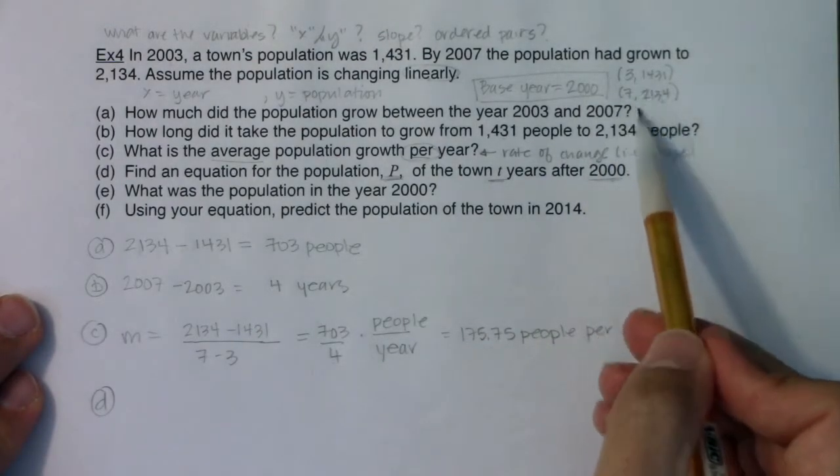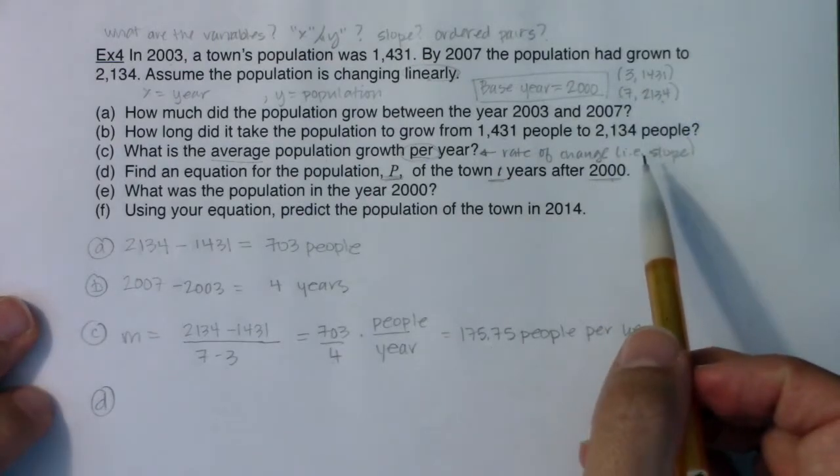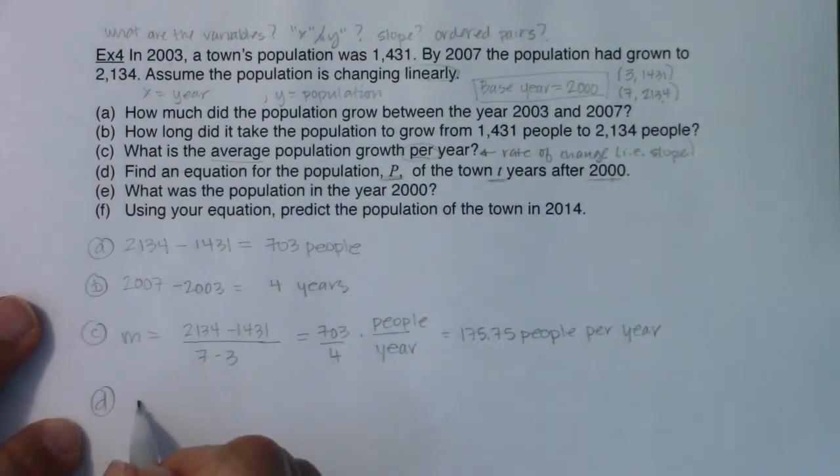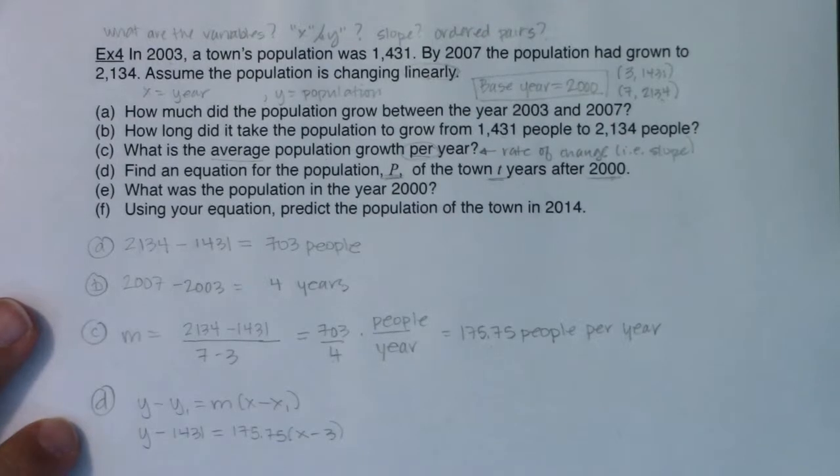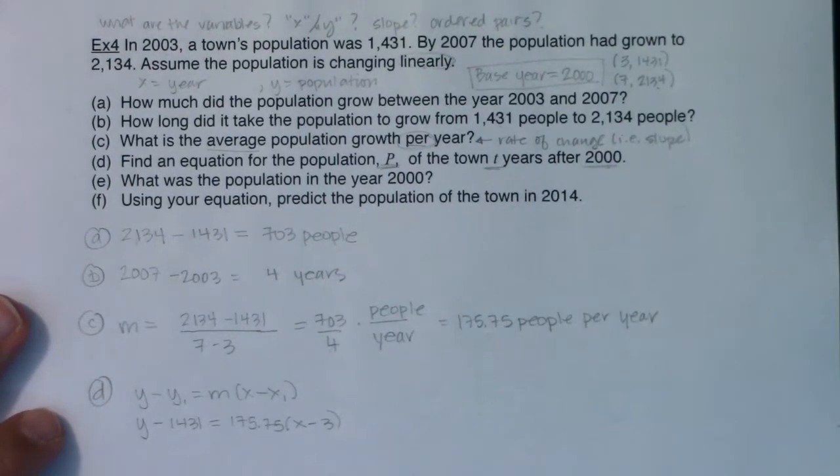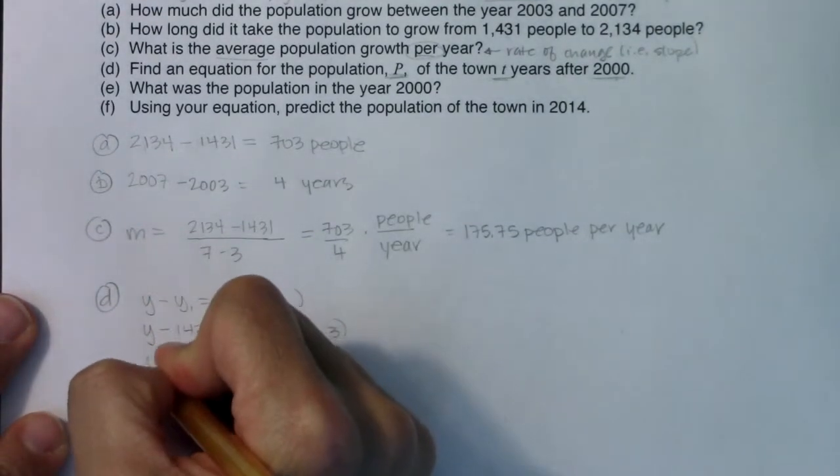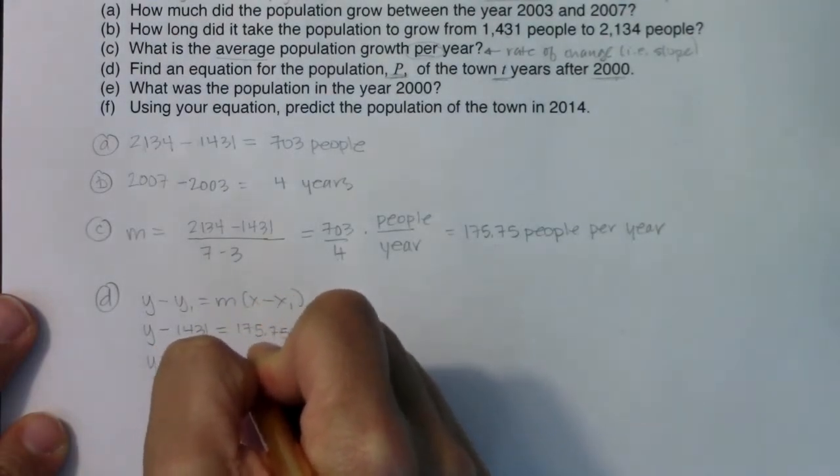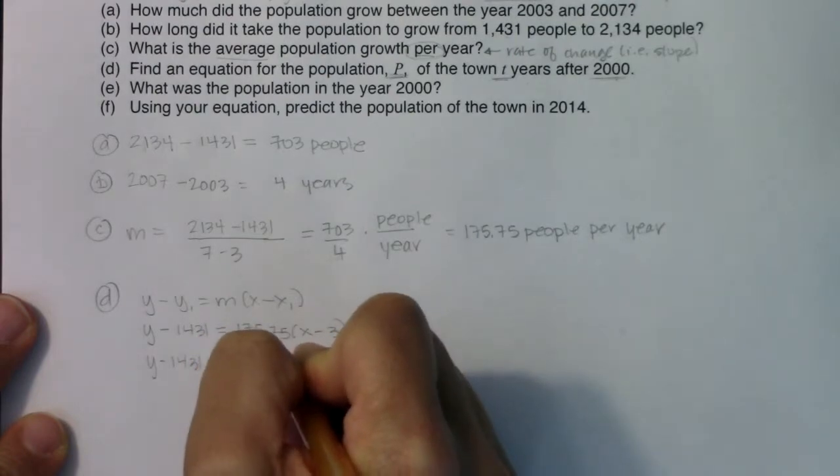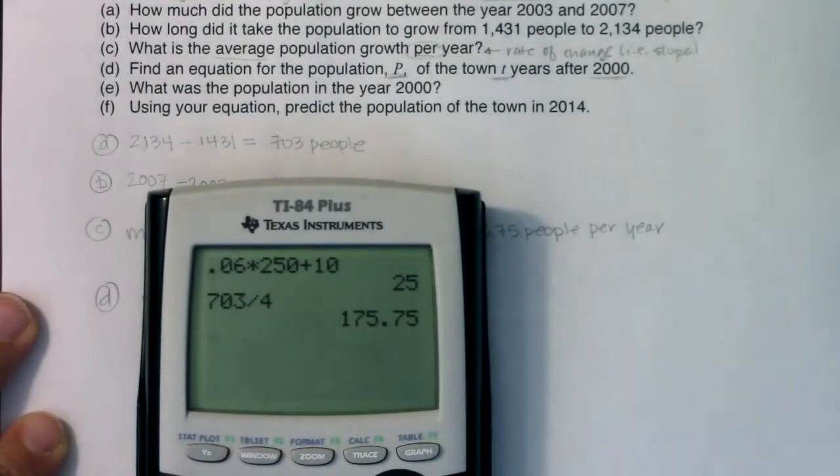Here we go. I have my two points and I have a slope, and I could use either of these two points. I'm going to use the one with the smaller numbers. If I go with my slope-intercept form, we know Y minus Y1 equals M times X minus X1. So in this case, we will have Y minus 1,431 equaling 175.75 times X minus three. Let's start doing this. We'll have Y minus 1,431 equaling 175.75X minus, let's see, multiply that by three. It looks like minus 527.25.